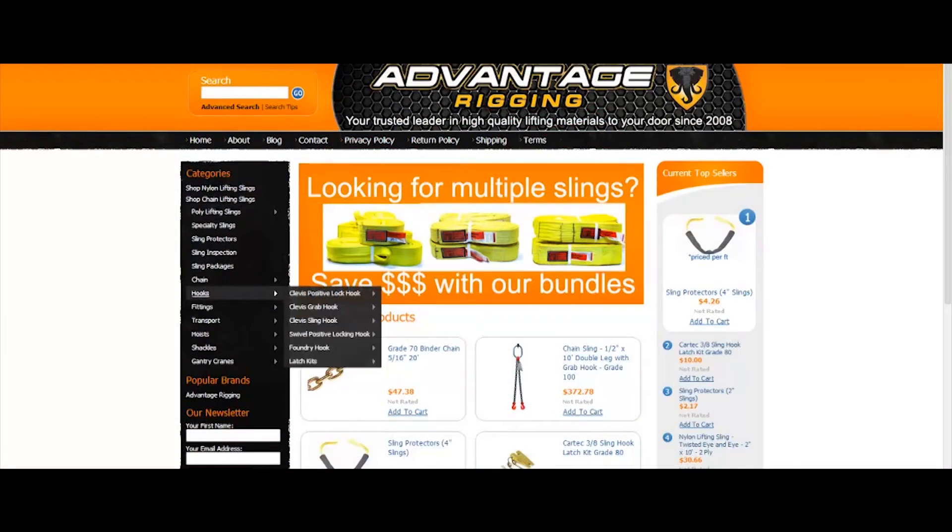Kar-Tec latch kits can be found at AdvantageRigging.com by navigating through our product menu under the hooks section. Alternatively, you can also find all the ranges of sizes we carry by typing Kar-Tec into the search bar at the top of the screen.